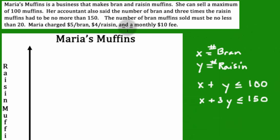The number of bran muffins—this is the next sentence here. The number of bran muffins sold must be no less than 20. Bran is x, and we said it's something to do with 20. It says it must be no less than 20. If it cannot be less than, it's got to be greater than or equal to. It says it cannot be less. So greater than or equal to is what it can be.